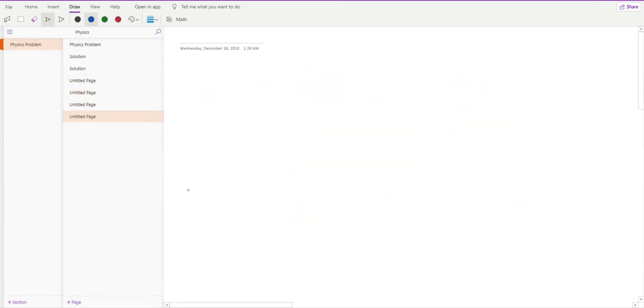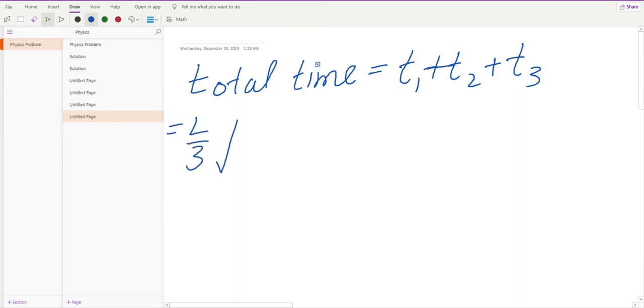Now I know that I have to find my total time. My total time is going to be equal to t1 plus t2 plus t3. If I add t1, which is L over 3 square root mu divided by tension of string, plus t2, which is L over 3 square root 2 mu divided by tension of string, and t3, which is L over 3 square root mu divided by 4 tension of string,